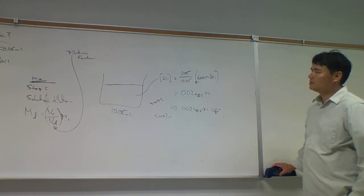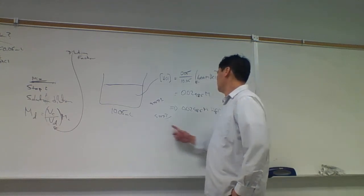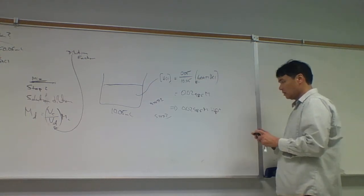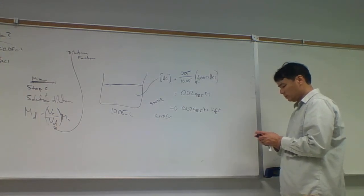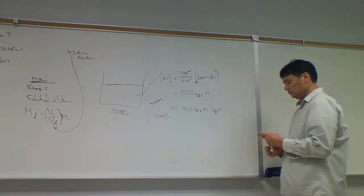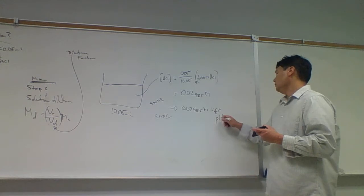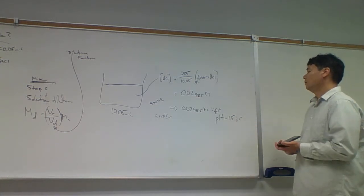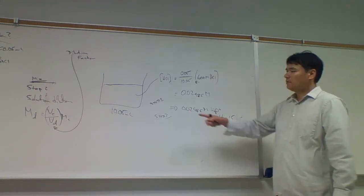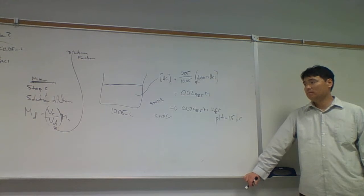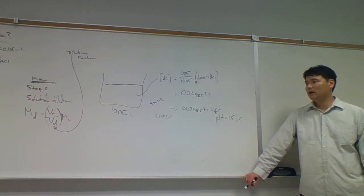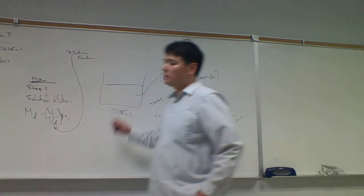So if we add one drop of 6 molar HCl, the pH changed from 7 to 1.525. The pH dropped from seven to one and a half. Remember, this is powers of ten — that's five to six powers of ten difference. The water in this beaker became 100,000 to a million times more acidic with just one drop of 6 molar HCl.